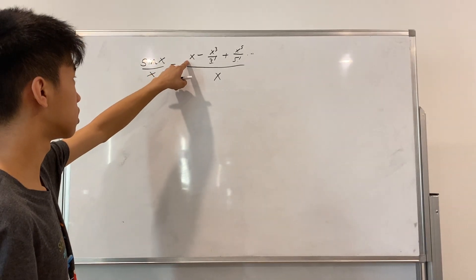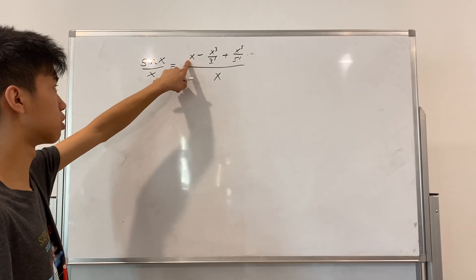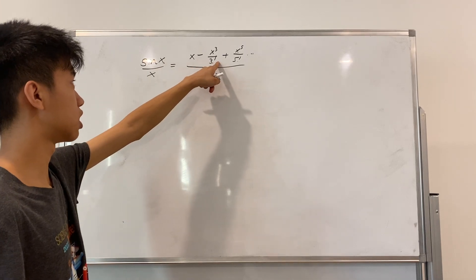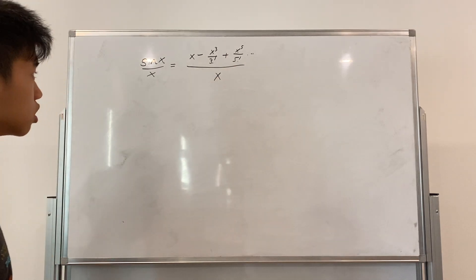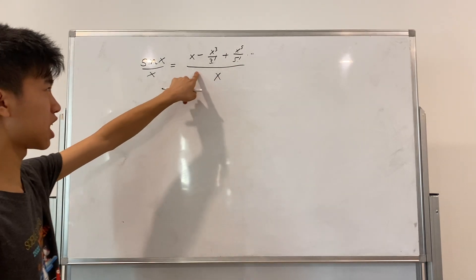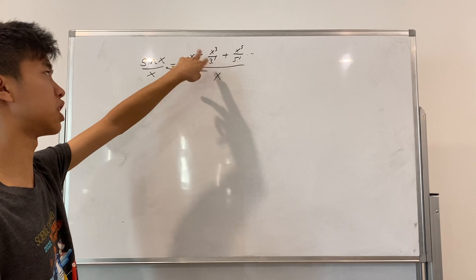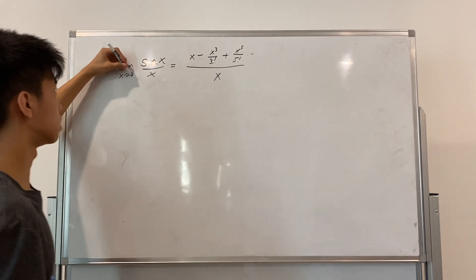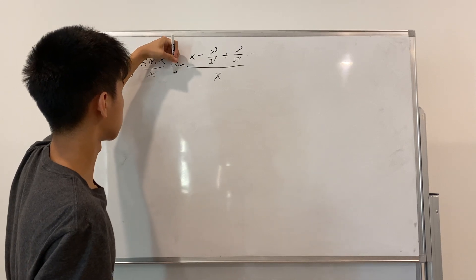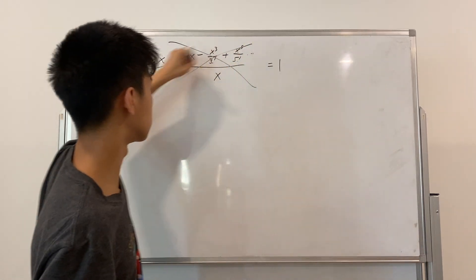For example, this x here is based on the first derivative of sine of x, this x cubed term is based on the third derivative of sine of x, and so on. So technically, we can't use this Taylor series to prove that the limit of this is 1. We can't use this.